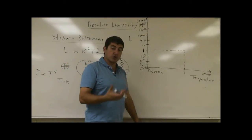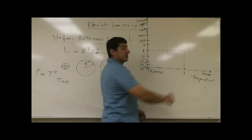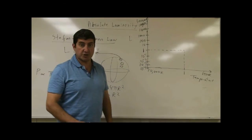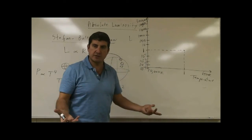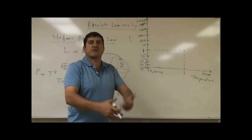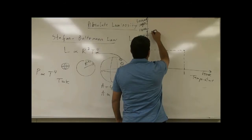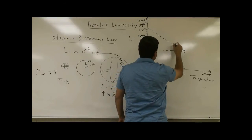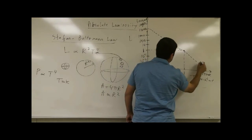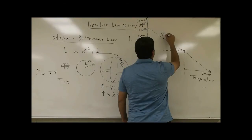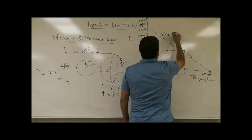There are horizontal lines on the HR diagram that represent the size of the stars. The size of our sun is defined as 1, and the radius of the sun we call 1. There will be a slanted line that goes through this point, and we'll call that the line where the stellar radius equals 1.